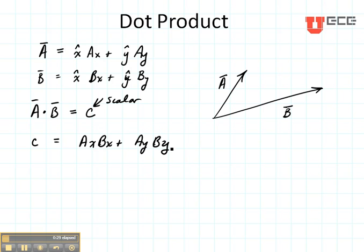What that value of C gives us is also evaluated as the magnitude of A times the magnitude of B times the cosine of the angle between them. Here's a picture of A and a picture of B and right here is the angle between them, theta AB.